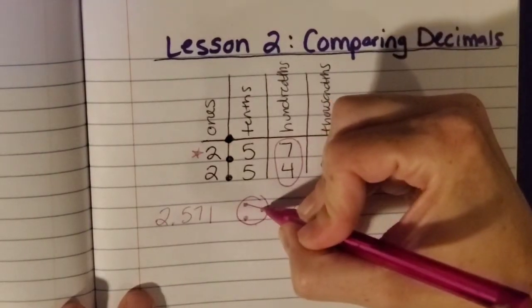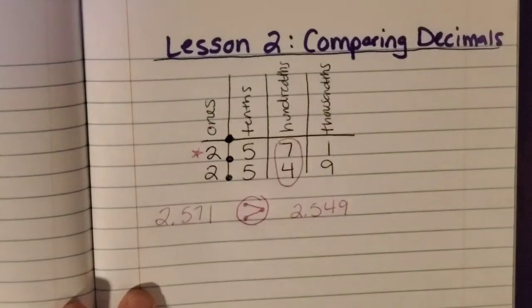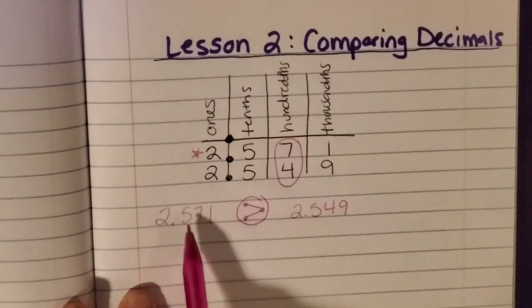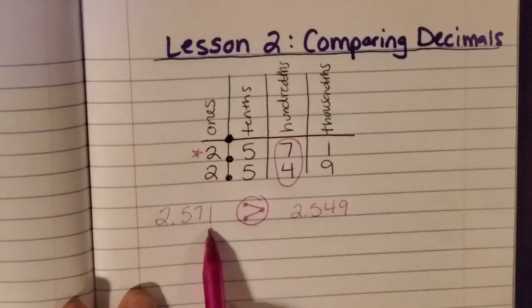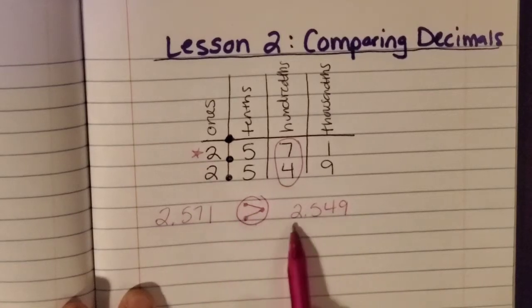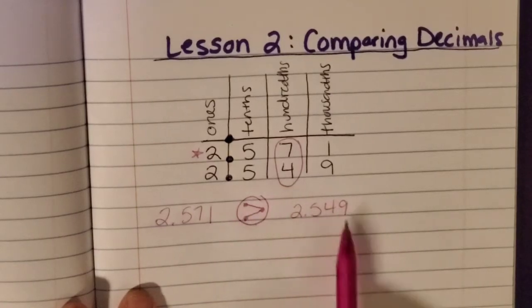And then it shows that two and five hundred seventy-one thousandths is greater than two and five hundred forty-nine thousandths.